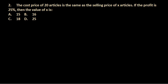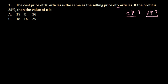Let's solve a question that's a little complicated. It says the cost price of 20 articles is the same as the selling price of X articles. The most important point is we don't know what X is, and we're told neither the cost price nor the selling price — everything is blank for us.